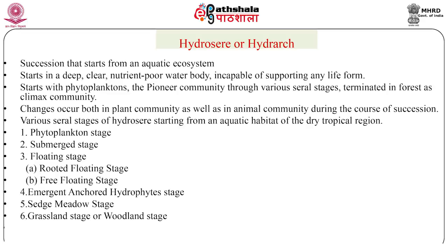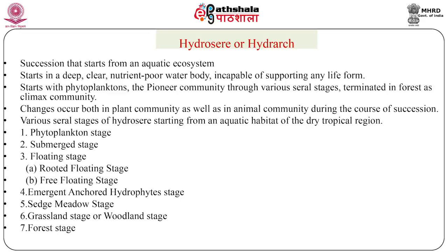Next is the grassland or woodland stage. Soil becomes drier for most part of the year, with much accumulation of humus rich in nutrients, facilitating the invasion of terrestrial plants — first herbs, then shrubs, and finally trees. The next stage is the forest stage. Depending upon the climate, the climax will be rainforest, temperate forest, or tropical forest. The diagram describes the various seral stages of hydrosere starting from the aquatic habitat of the dry tropical region.